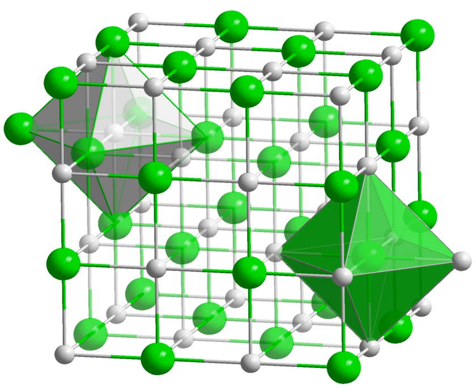In materials chemistry, a binary phase is a chemical compound containing two different elements. Some binary phase compounds are molecular, e.g. carbon tetrachloride. More typically, binary phase refers to extended solids. Famous examples are the two polymorphs of zinc sulfide.